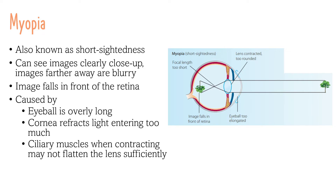Myopia, also known as short-sightedness, occurs when images are clear close up but images further away are quite blurry. This means the image falls in front of the retina as opposed to on the retina. This could be caused by the eyeball being overly long, the cornea refracting too much light entering, and the ciliary muscles, when contracting, may not flatten the lens sufficiently.